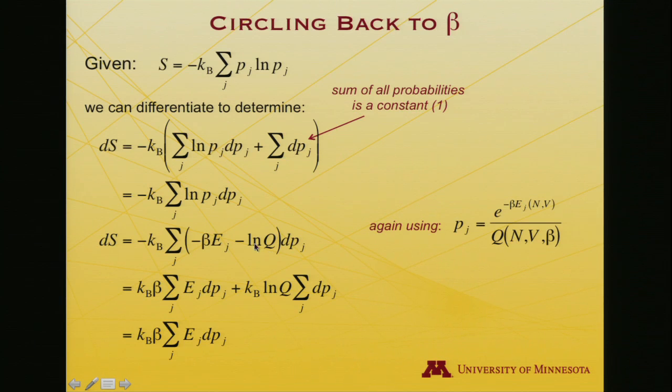So when I plug that in, I get a log of a quotient, so I'll separate that out into two logs. So the first term would be the log of the exponential. That goes away, I'm just left with the argument of the exponential, minus beta ej. Second term is q itself, so minus log q, all dp.